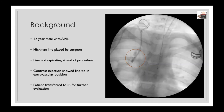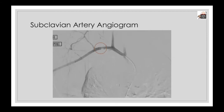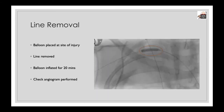The interventional radiologist was subsequently called and the patient was transferred to the IR department for further evaluation. A subclavian artery angiogram was performed via a right femoral artery approach. This showed that the Hickman line inserted by the surgeon had actually transfixed the subclavian artery and subsequently perforated through into the pleural cavity. Given the position of the injury, simply pulling out the line would have led to severe bleeding due to an inability to compress the artery. Therefore, following discussion with the vascular surgeons, it was decided to facilitate line removal by performing a balloon occlusion of the artery.